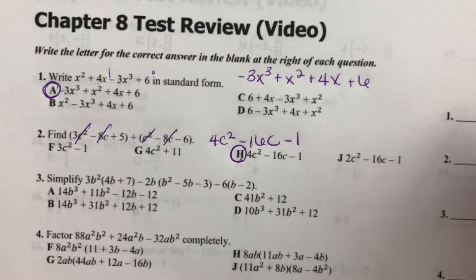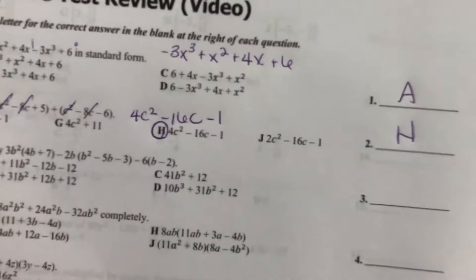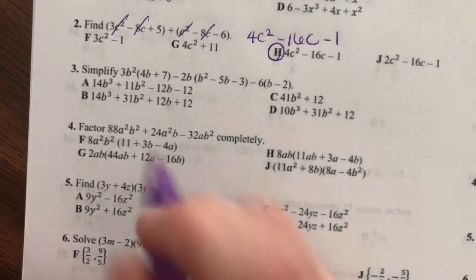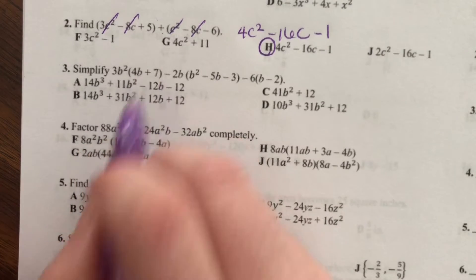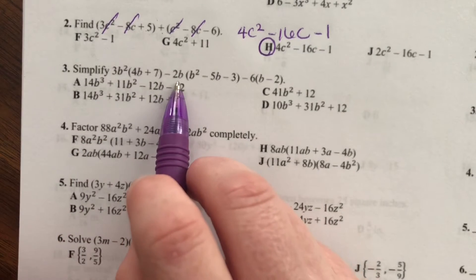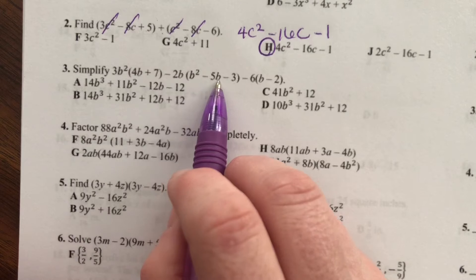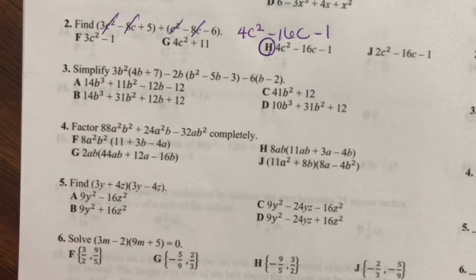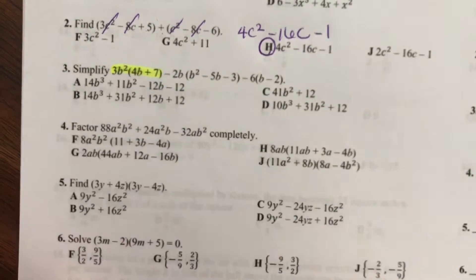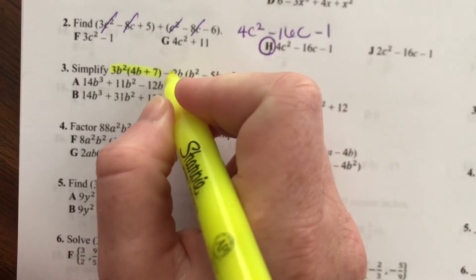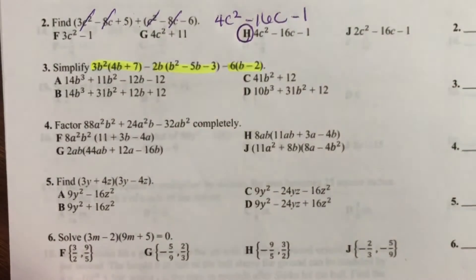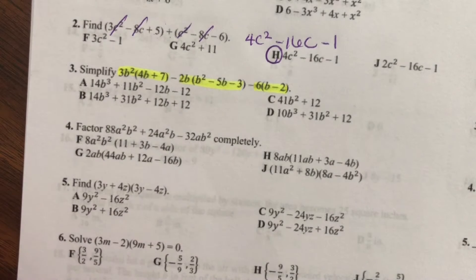A and then H off to the side — don't forget to fill those in. Number 3, simplify: 3b squared times the quantity 4b plus 7, minus 2b times the quantity b squared minus 5b minus 3, minus... So there are three different groupings here, three different terms we have to distribute. We're going to distribute the 3b squared, the negative 2b, and the negative 6.